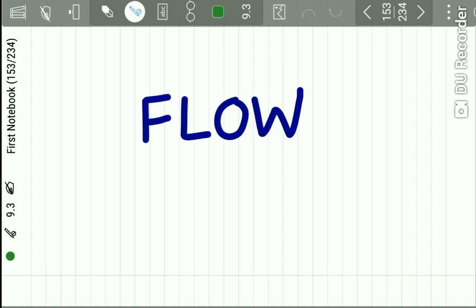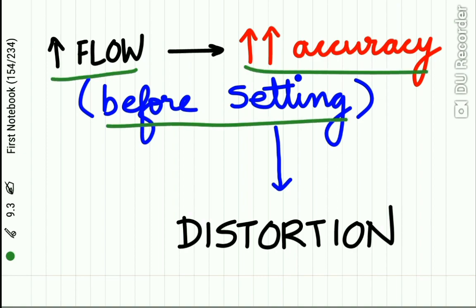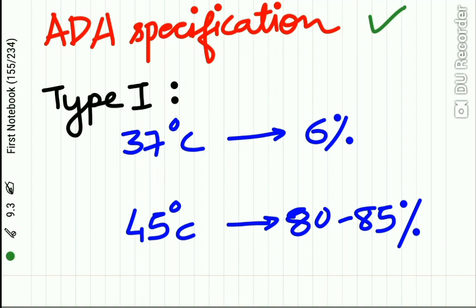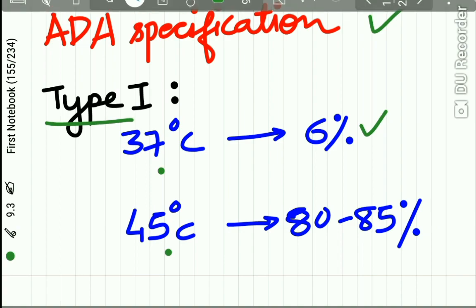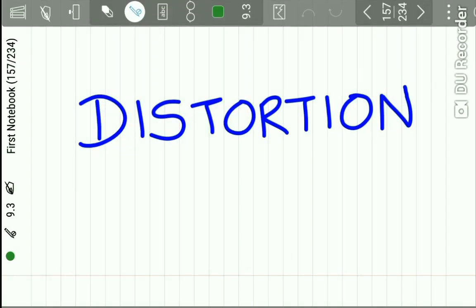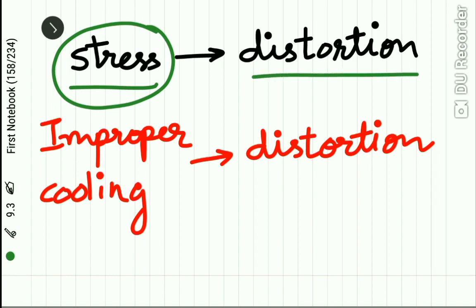Flow is desirable as well as harmful. Increased flow before setting gives increased accuracy of the impression, but after the material has set, if there is flow, there is distortion of the impression. According to ADA specification number 3, Type 1 impression compound should have a flow of 6% at 37 degrees Celsius and 80 to 85% at 45 degrees Celsius. Distortion occurs due to the release of stress from the impression, and another important cause is improper cooling.